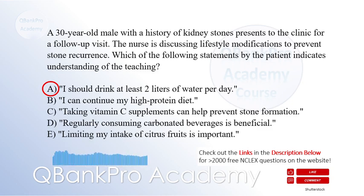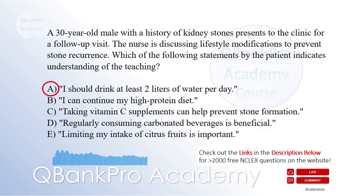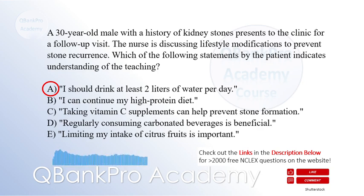Explanation: Adequate hydration is crucial in preventing kidney stone recurrence. Drinking at least 2 liters of water per day helps dilute urine and reduce the concentration of stone-forming substances. A high-protein diet can increase the risk of certain types of stones, so it is not recommended. Excessive intake of vitamin C supplements can increase the risk of oxalate stones, so it is contraindicated. Regularly consuming carbonated beverages can increase the risk of stone formation. Limiting the intake of citrus fruits is not necessary.